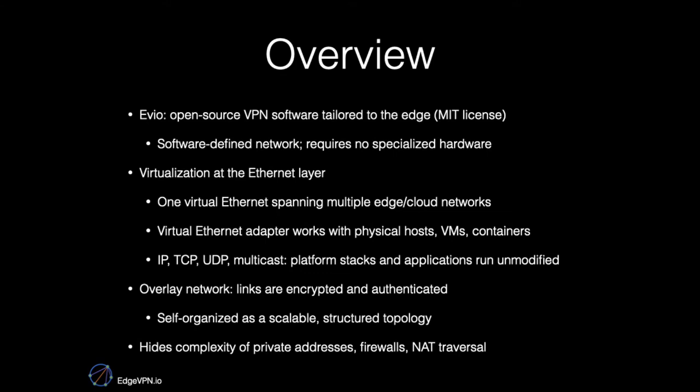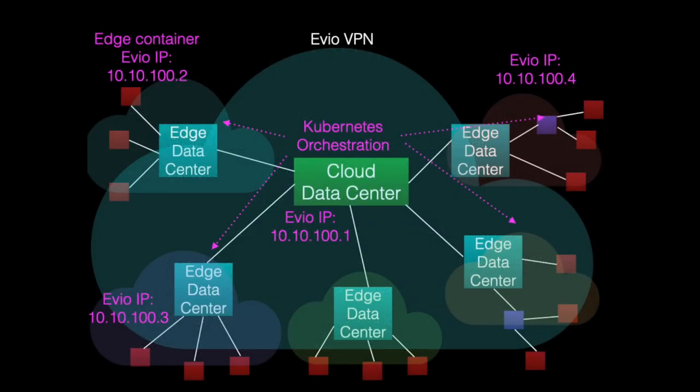EVO requires no management of links and creates a scalable topology that supports scalable edge computing applications. It also hides the complexity of dealing with private addresses, firewalls, and traversing NATs. With EVO, you can run a virtual private network to, for example, run a Kubernetes cluster distributed across cloud and edge computing systems.